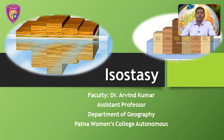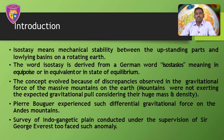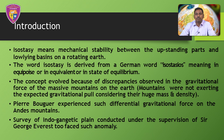Today we are going to learn on an important topic of geomorphology, that is isostasy. There is a question in the mind of people about how upstanding parts like mountains, plateaus, plains and ocean basins are in equilibrium on this rotating earth. Isostasy simply means mechanical stability between the upstanding parts and low-lying basins on a rotating earth. The word isostasy is derived from a Greek word meaning the parts are in a state of equilibrium.